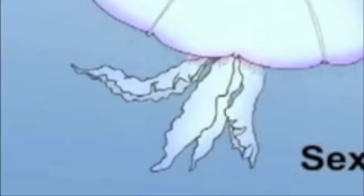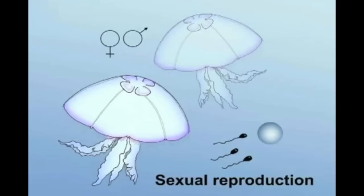Reproduction begins when the male releases sperm through its mouth into the surrounding water. These swim to the female, where they enter her central oral cavity to reach the eggs.